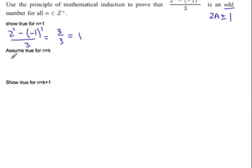Assume true for n equals k. So we have 2^k minus (-1)^k all over 3. That should be 2a, and we'll just stick with plus 1. Hopefully we can get it in plus 1.